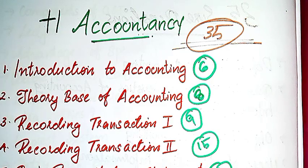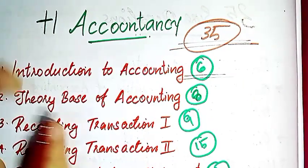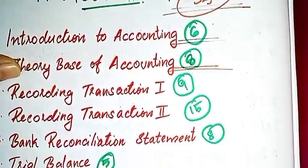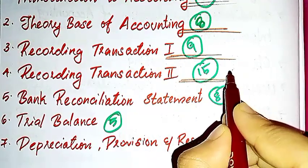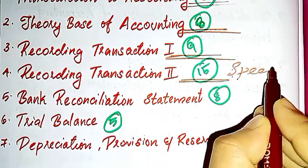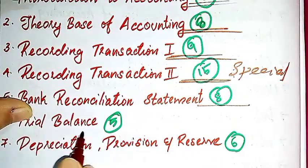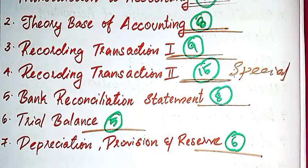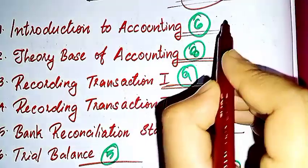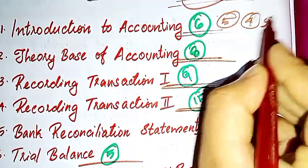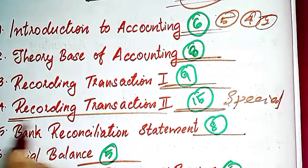First chapter is Introduction to Accounting with 6 marks. Second chapter with 4 marks. Theory Base of Accounting is 8 marks. Recorded Transactions is 9 marks and 10 marks. We'll also cover special journals.